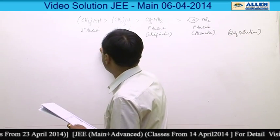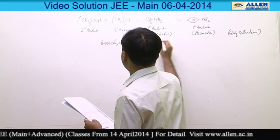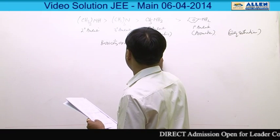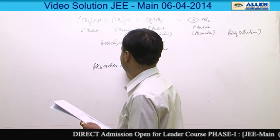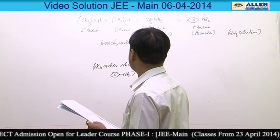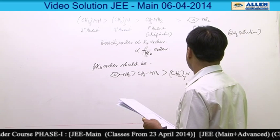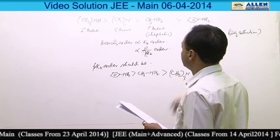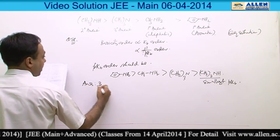Since basicity is directly proportional to Kb and inversely proportional to pKb, the pKb order from highest to lowest is: C6H5NH2, then CH3NH2, then (CH3)3N, then (CH3)2NH. So (CH3)2NH has the smallest pKb value, and the answer is option 3.